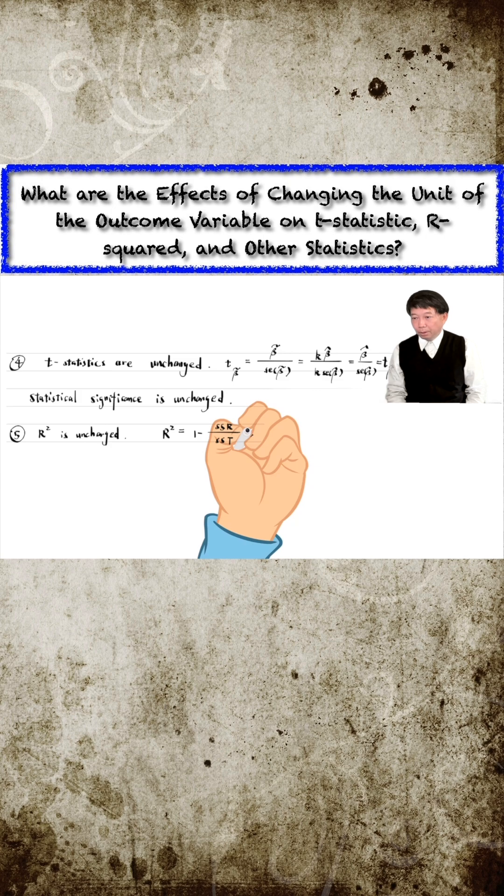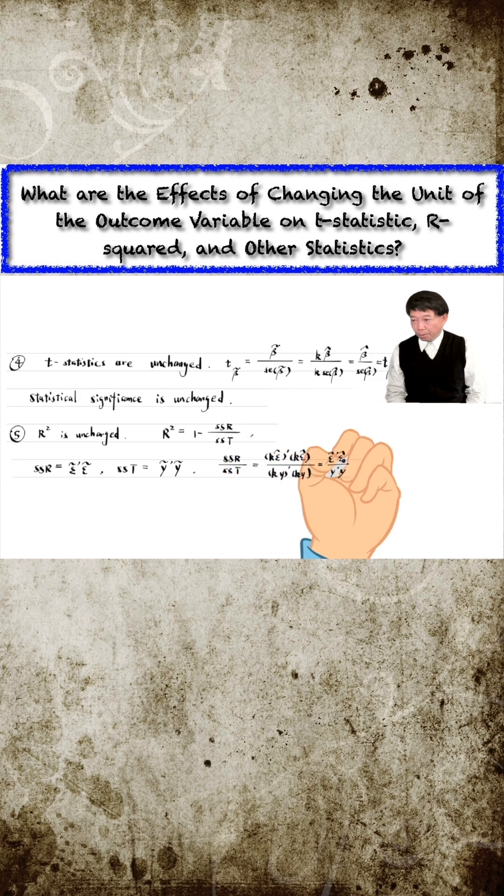We can show it using its definition: 1 minus the residual sum of squares divided by the total sum of squares. The residual sum of squares and the total sum of squares are both rescaled by k-squared, leading to an unchanged r-squared.